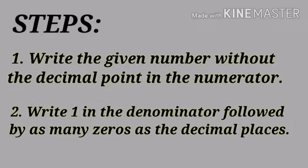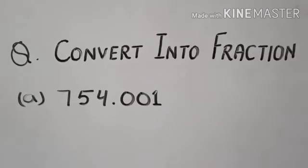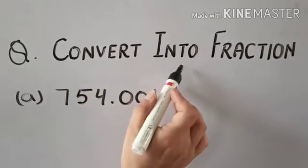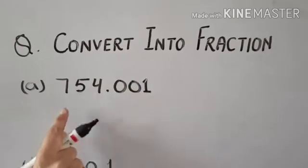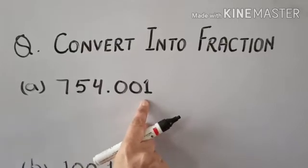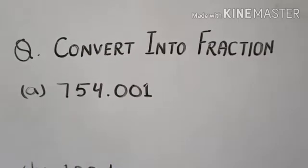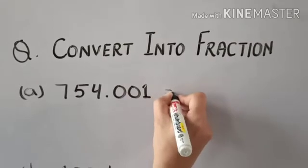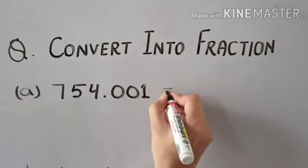Let us understand these steps with the help of an example. Here the question is convert into fraction. The first part is 754.001. Our first step is to write the given number without the decimal point.